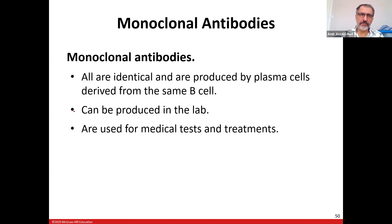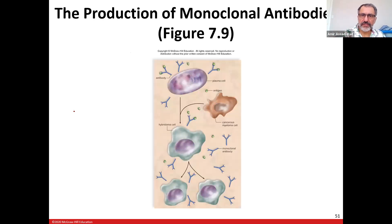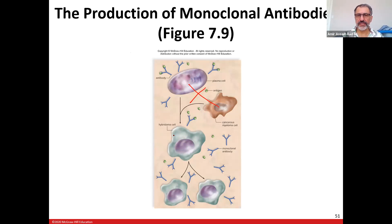Monoclonal antibodies — humans can make antibodies in the laboratory. They take plasma cells and cancer cells, combine them together to create a hybrid cell called a hybridoma cell. Hybridoma cells can multiply because they have cancer cells in them, and they can also make antibodies.